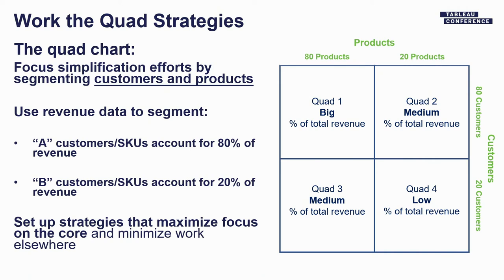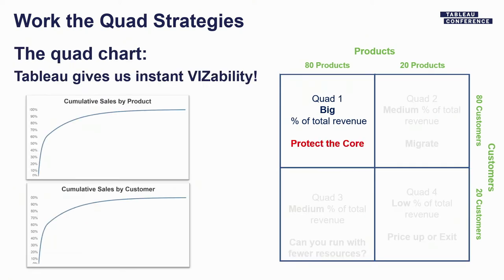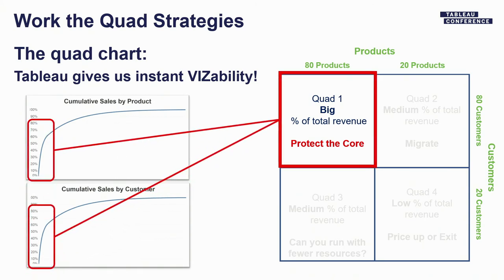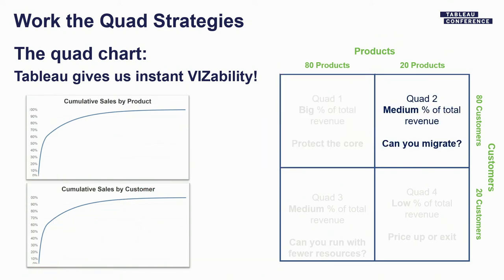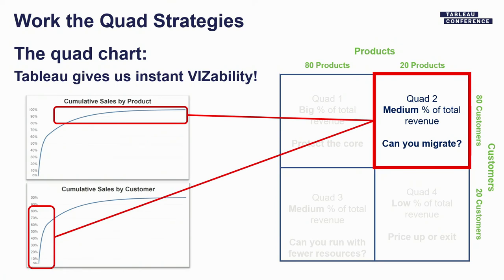We use a really useful tool called a quad chart, which helps us segment our customers and products, and then identify what our strategy will be for each segment. Tableau comes into play by creating actions on these Pareto charts to instantly show which customers and products are 80s and 20s. Quad one — our largest percentage of revenue — is the intersection of our 80s customers and our 80s products. This is the group we absolutely want to protect and focus on first and foremost.